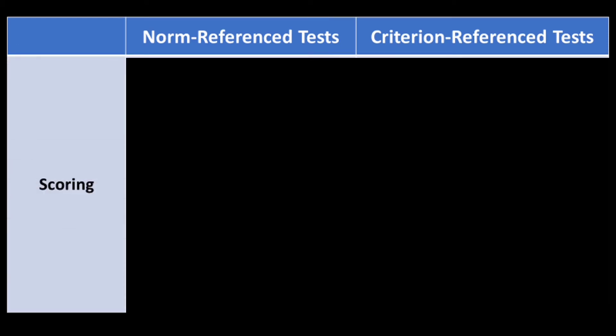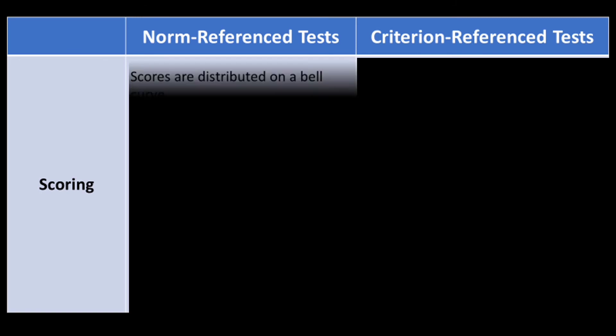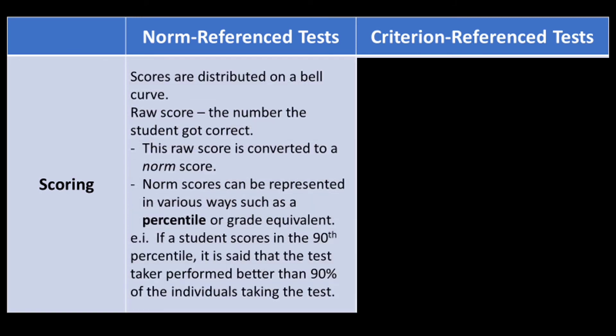As to scoring, for Norm Reference Tests, scores are distributed on a bell or normal curve. The raw score pertains to the number the student got correct. This raw score is converted to a norm score, which can be represented in various ways such as a percentile or grade equivalent. For example, if a student scores in the 90th percentile, it means the test taker performed better than 90% of the individuals taking the test.